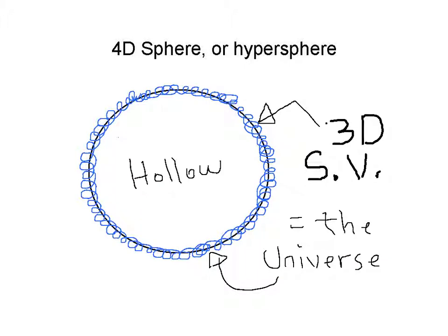The universe as the three-dimensional surface volume of a four-dimensional sphere solves these problems. In this diagram, we have reduced a four-dimensional sphere to a two-dimensional view, and the blue represents the 3D surface volume. The center of the hyperverse is hollow and must be for the same reasons given why a 3D sphere cannot be the universe.